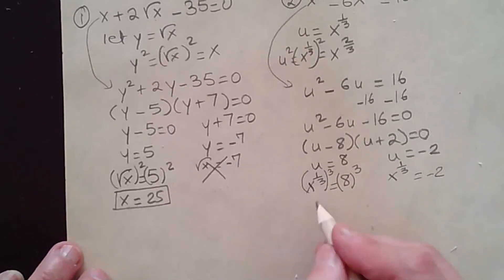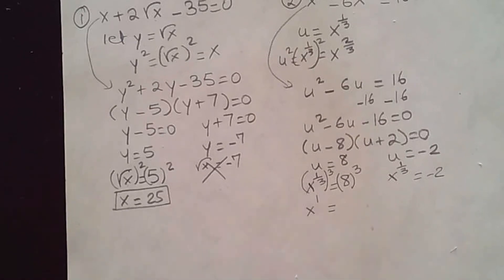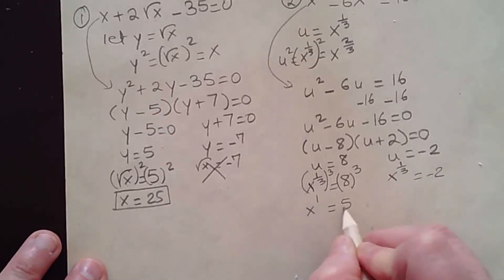So that gives me x to the 3 over 3, or x to the 1, equal to 8 cubed. You can go ahead and use your calculator. Raise 8 to the 3rd power, and you should get 512. You can remove the exponent here. Just make this x equal 512.